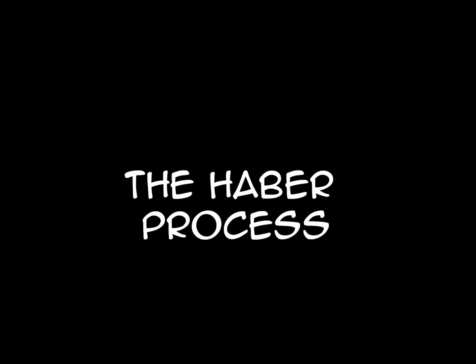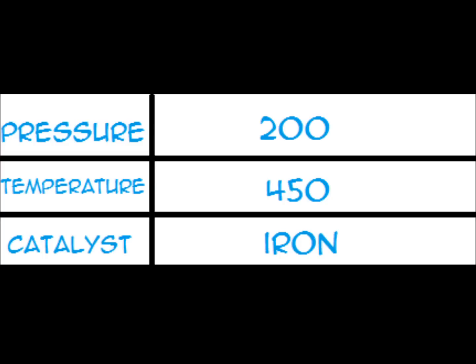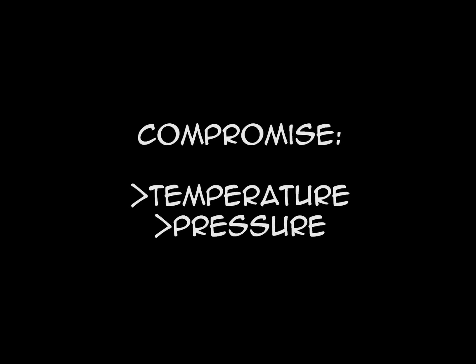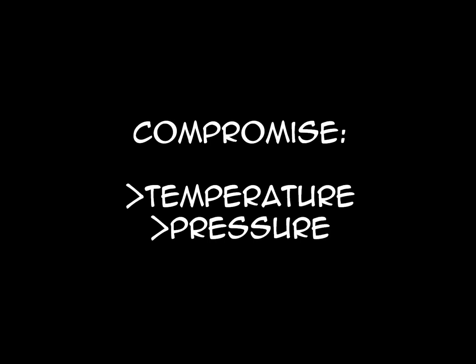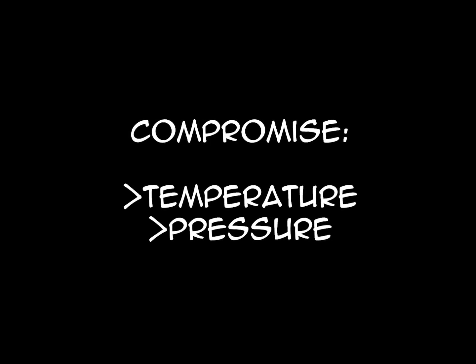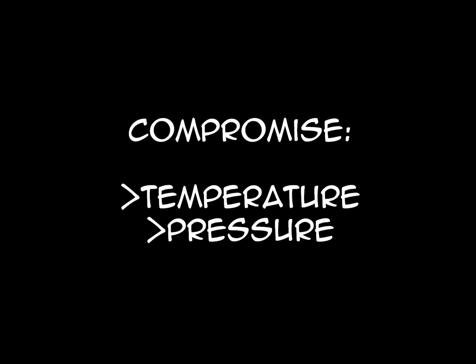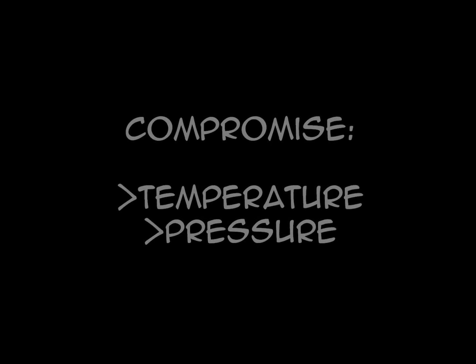The Haber process is a reversible reaction. Compromises must be made on temperature and pressure. The pressure is 200 atmospheres, the temperature is 450 degrees Celsius, and the catalyst is iron. The unused hydrogen and nitrogen is recycled. The high pressure favours the forward, exothermic reaction, so pressure is as high as possible to give the best yield whilst keeping factory costs down and the reaction safe. The yield of ammonia is highest with lower temperatures, but this means a slow rate of reaction, so a compromise is made between maximum yield and the speed of reaction.